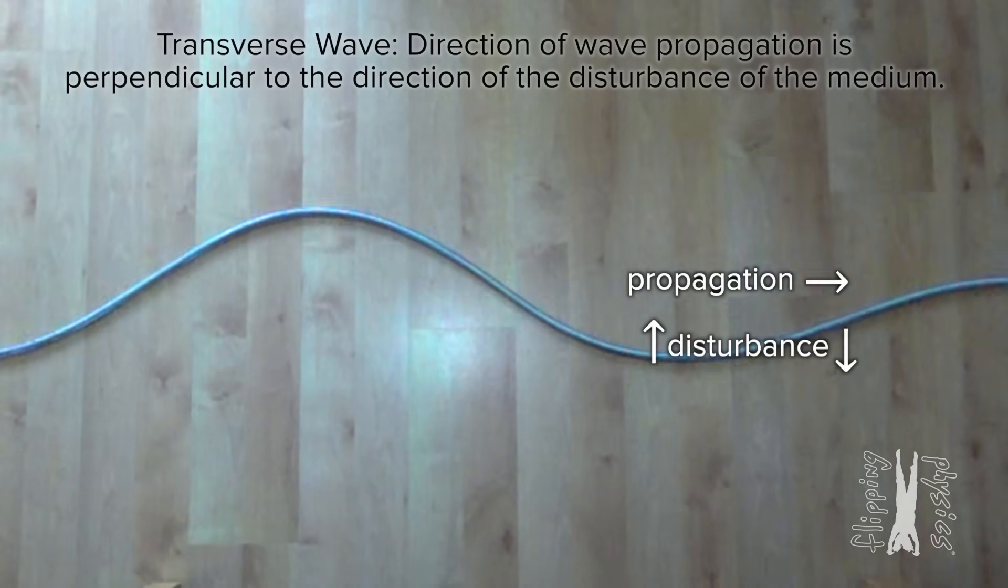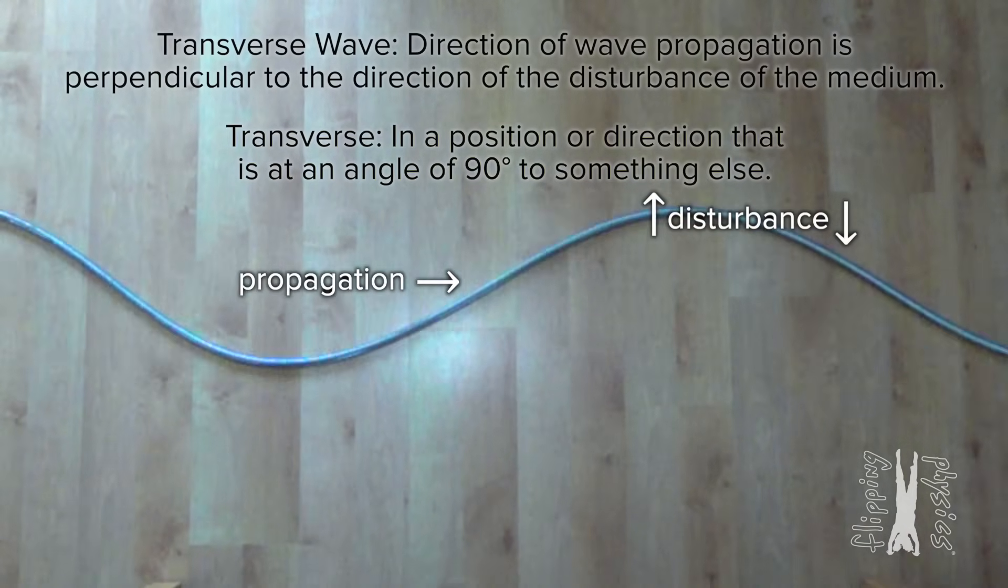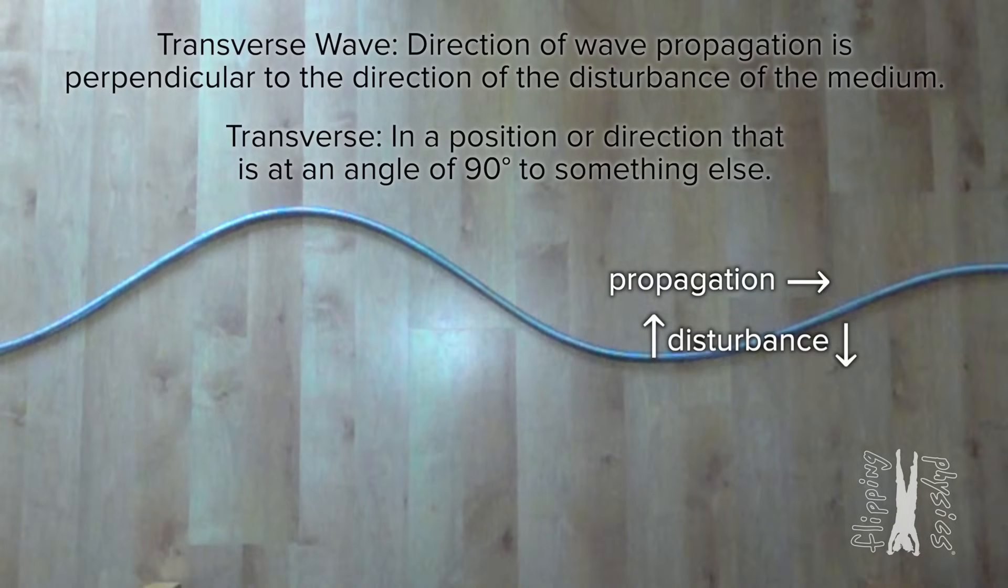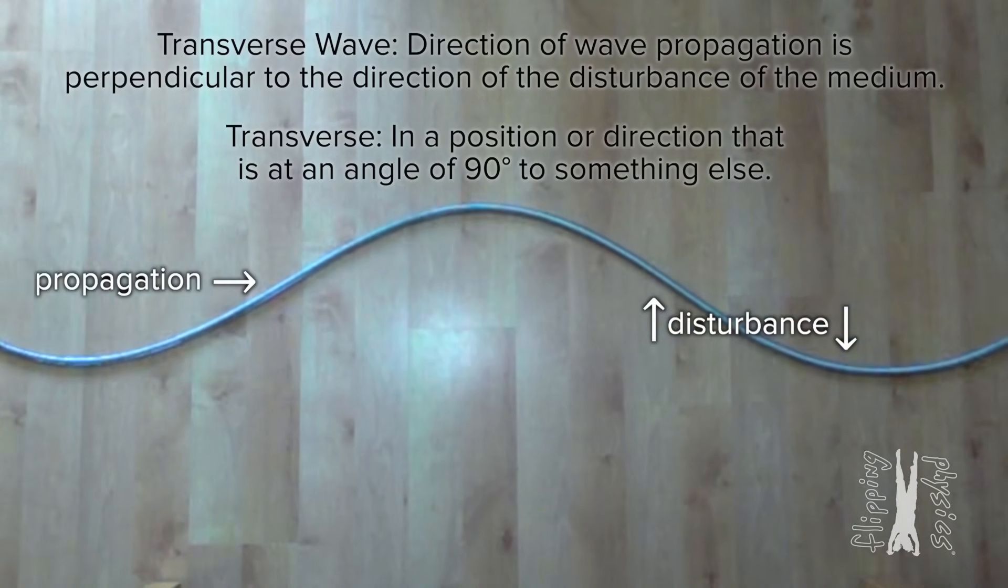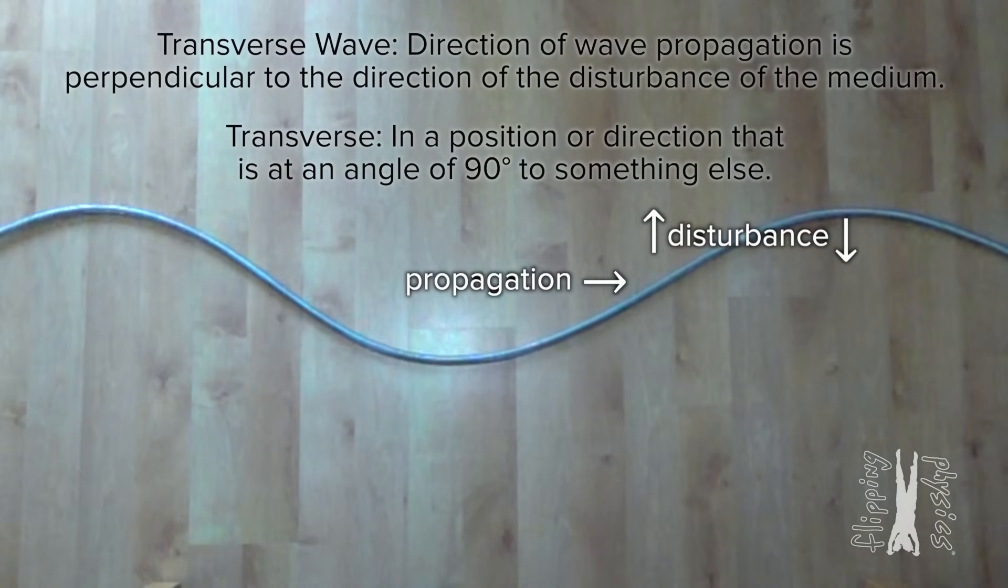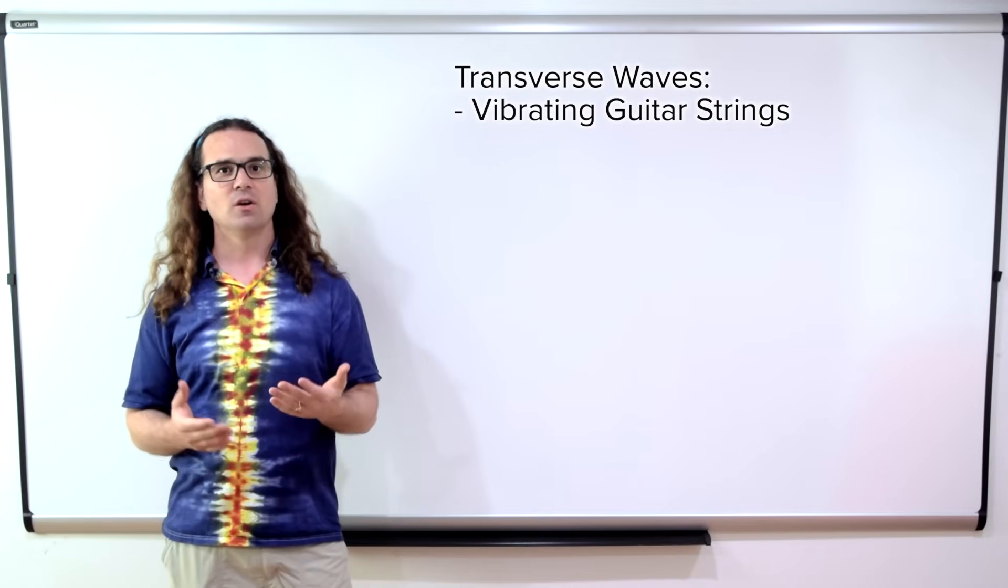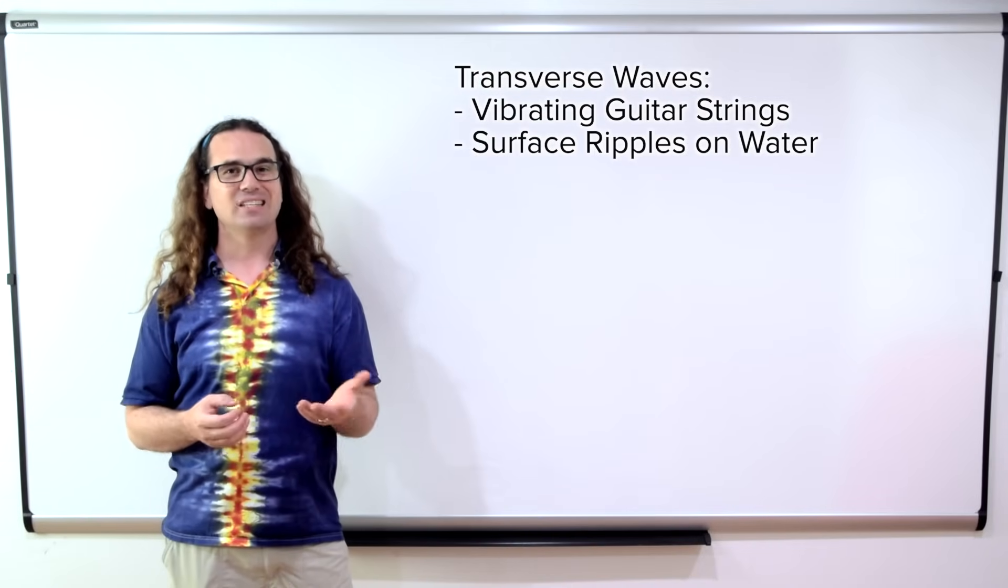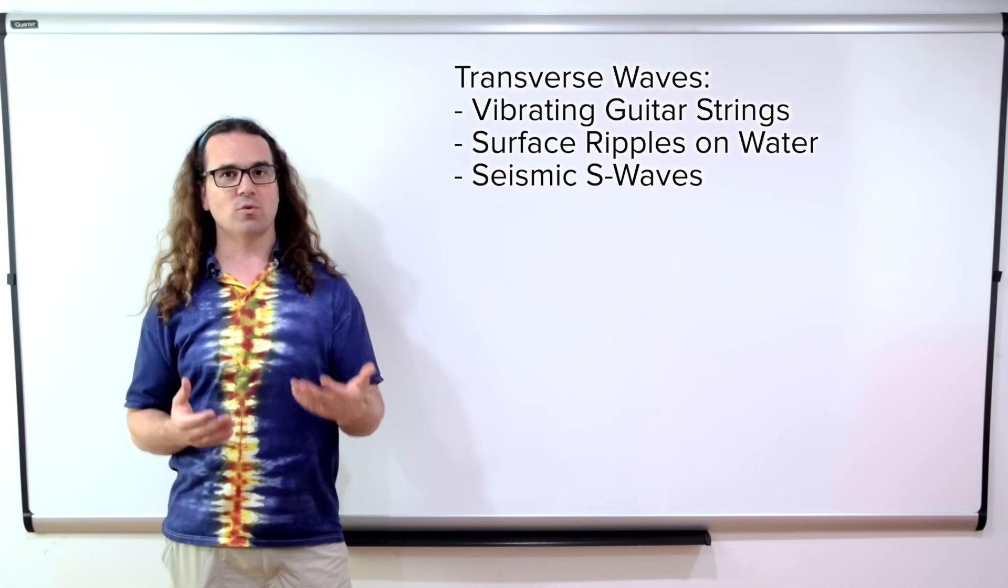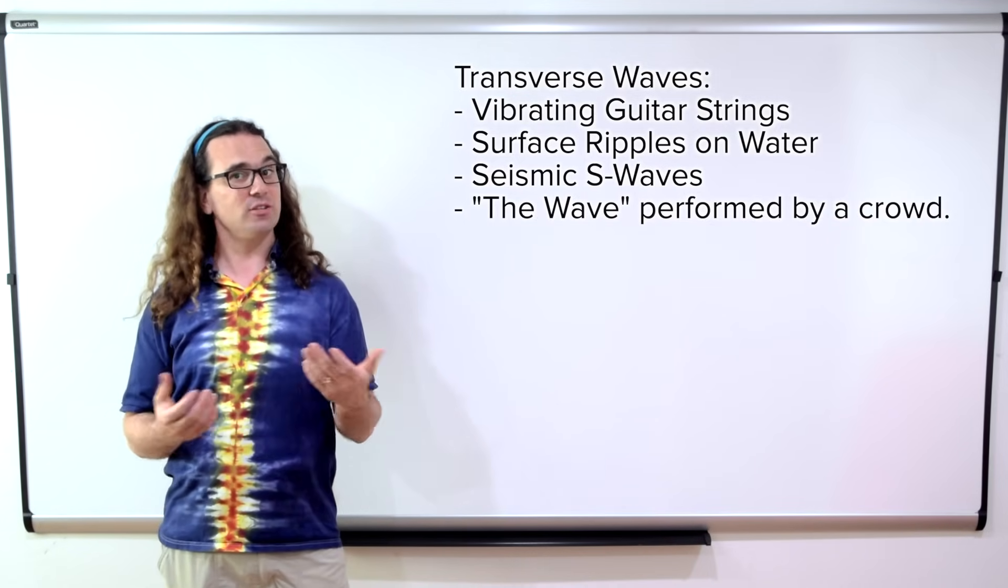And according to the Cambridge Dictionary, transverse means in a position or direction that is at an angle of 90 degrees to something else. That must be why it is called a transverse wave. That is correct. Examples of transverse waves are waves on the strings of a guitar, ripples on the surface of a pond, seismic S waves, which are waves in the earth much like water waves, and even the wave as performed by a crowd at a sports game.